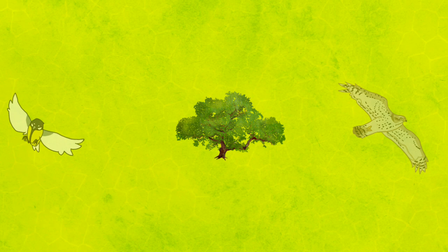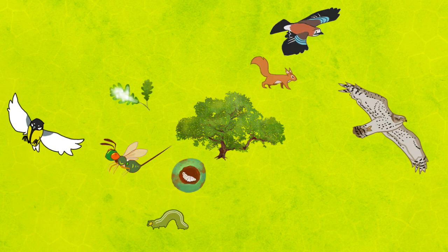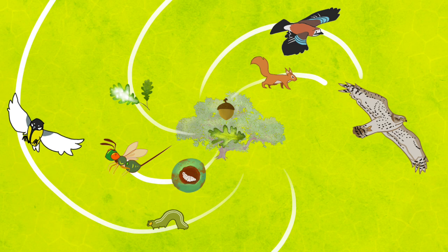The birds, squirrels, insects, fungi, and the oak form a living network — a food web. They depend on one another for food and shelter.